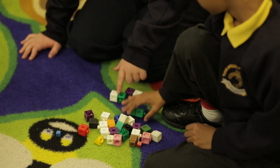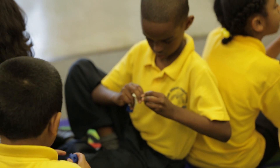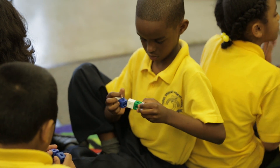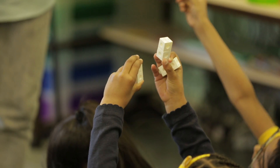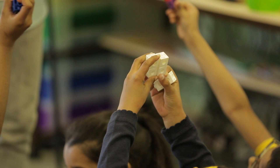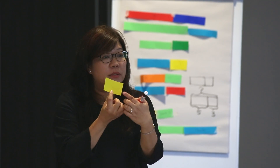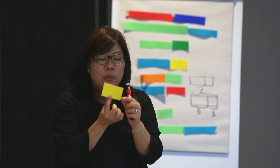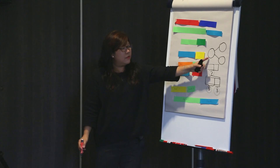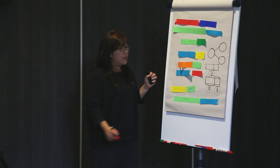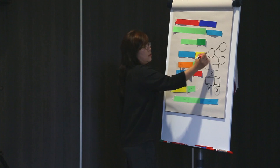They start with concrete materials like unifix cubes to represent situations. And later on, they progress to using pieces of paper, strips of paper to model situations. And afterwards, they learn a variety of skills connected to bar models.